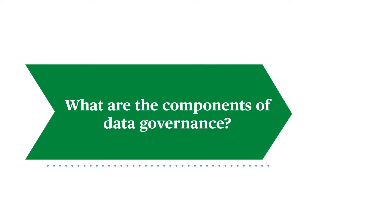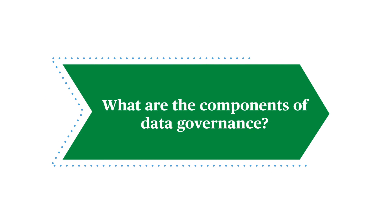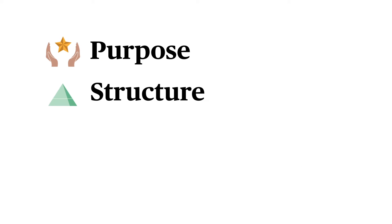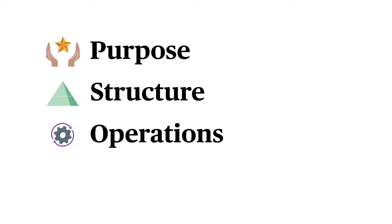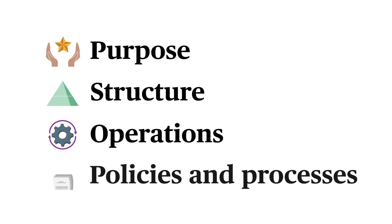What are the components of data governance? A data governance program has four key components: purpose, structure, operations, and policies and processes.